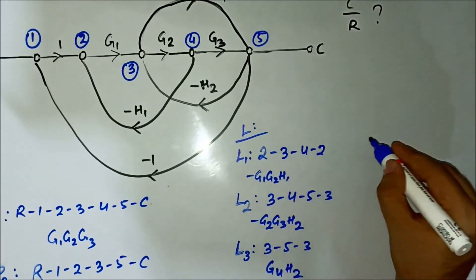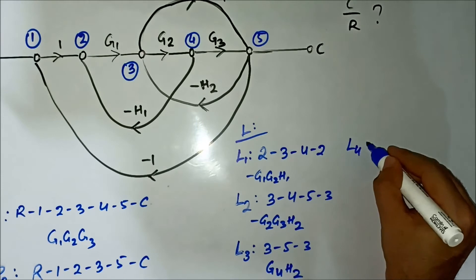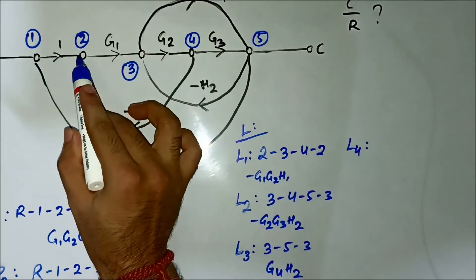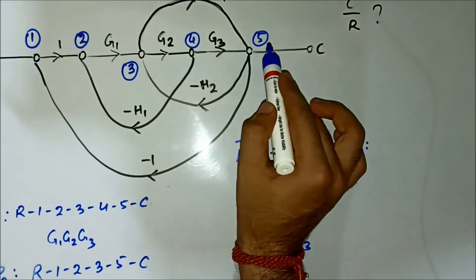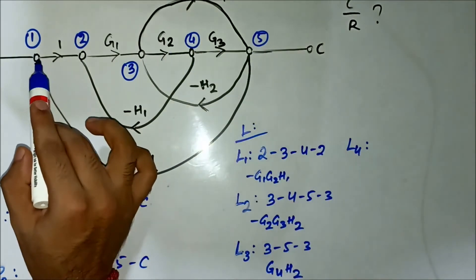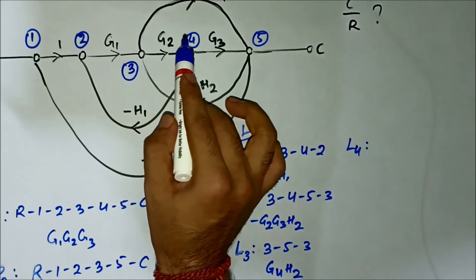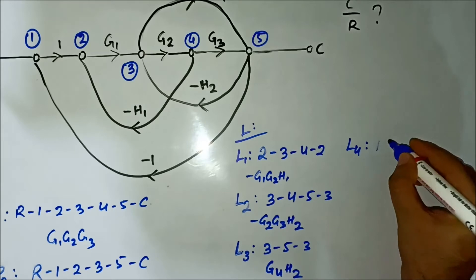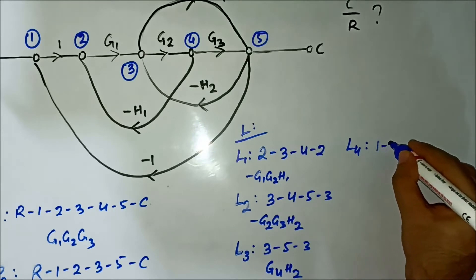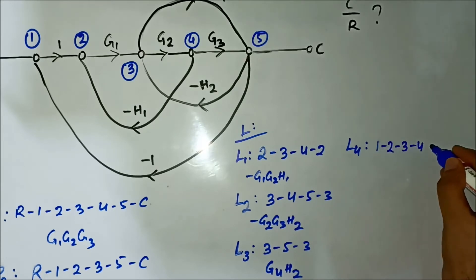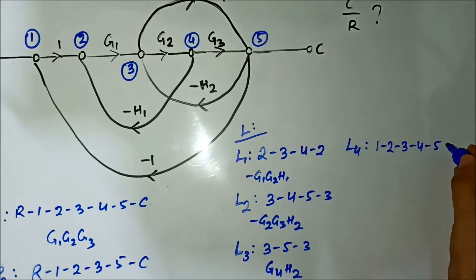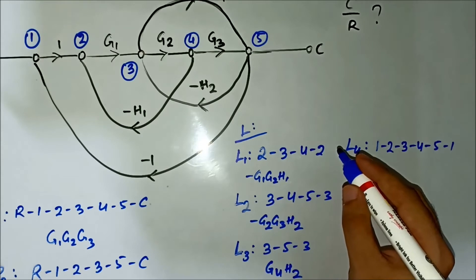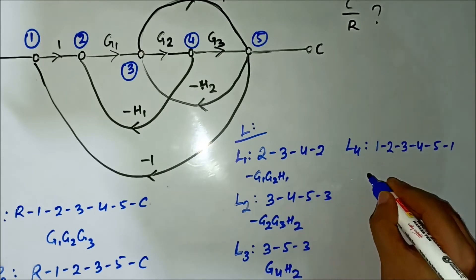A fourth loop is L4: 1→2→3→4→5→1, and its gain is -G1·G2·G3.